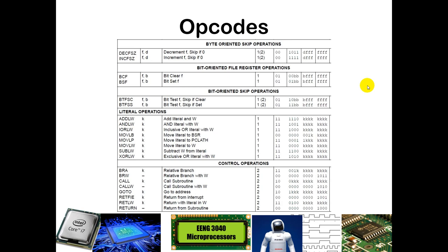Decrementing, incrementing, and skip-if-zero are byte-oriented with skip and have a very similar structure. For bit-oriented commands, the specific bit referenced gets 000 through 111 in the B locations. Byte-wise with skip has a similar structure again. For literal commands, most cases have K values for where the literal values go — typically 8 bits. For bank select, only 5 bits are needed. Control instructions, including return, call, and go-to statements, are also shown and you can see how they are structured.